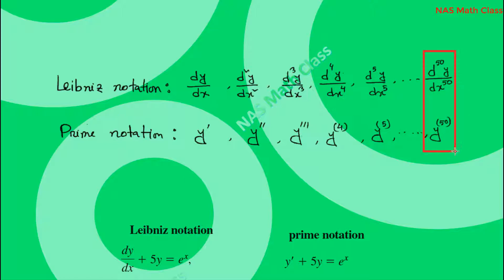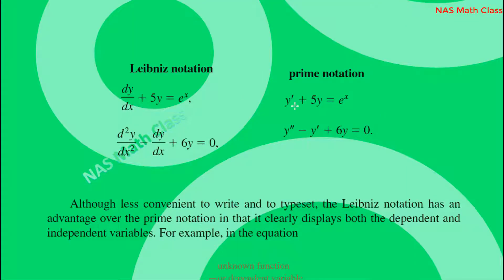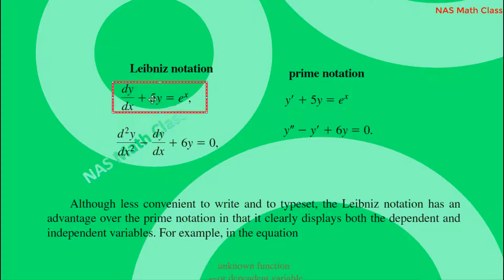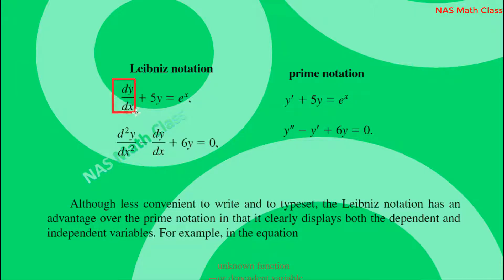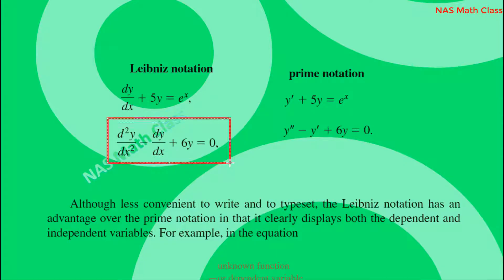Now let us look at examples. In Leibnitz notation, a differential equation dy/dx plus 5y equals e to the power x can also be written in prime notation as y prime plus 5y equals e to the power x — both represent the same thing. In Leibnitz notation we write dy/dx, and in prime notation we write y prime; these are the same.